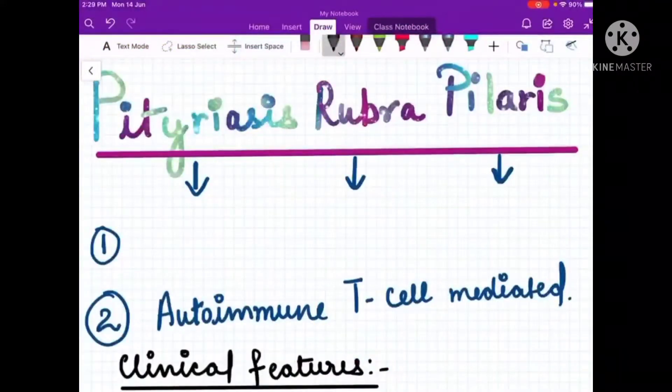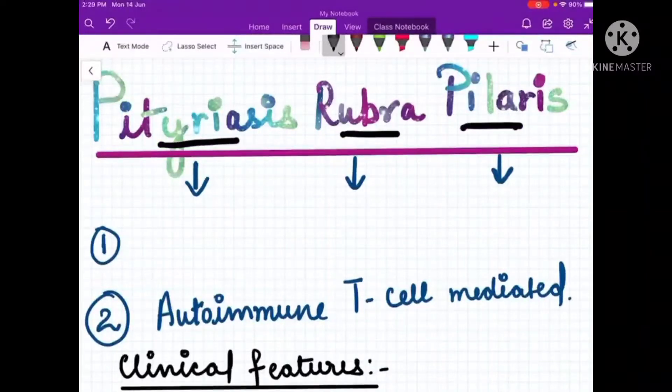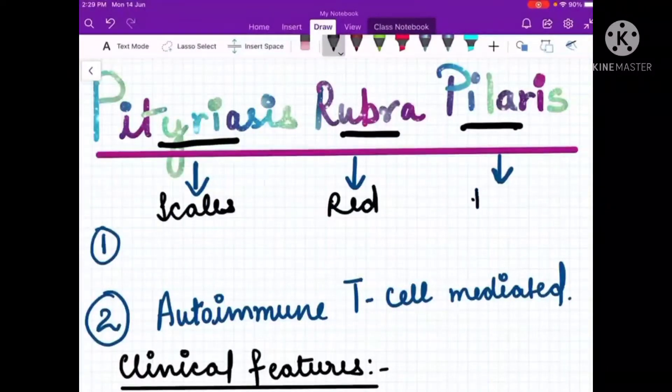Hey guys, welcome to my channel Pulmonaria. I make short and concise videos about important medical topics meant for quick revision. Today we are discussing Pityriasis Rubra Pilaris. Pityriasis meaning scales, rubra means red, and pilaris means hair. So the condition involves red scaly papules and also involves the hair.